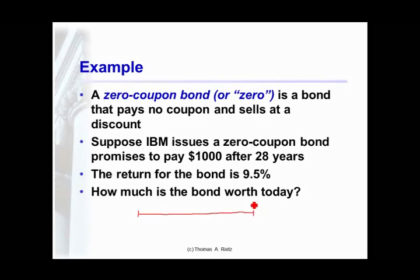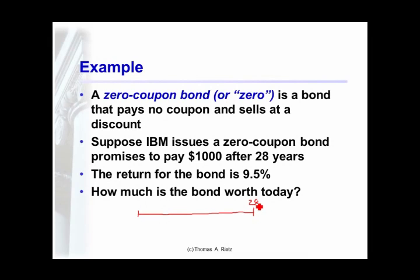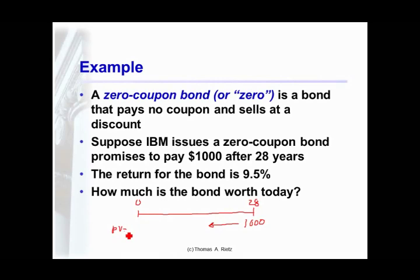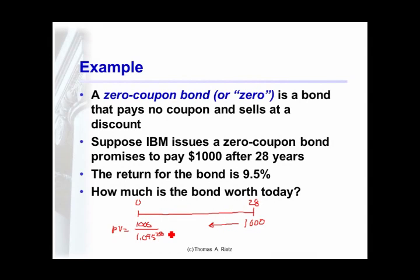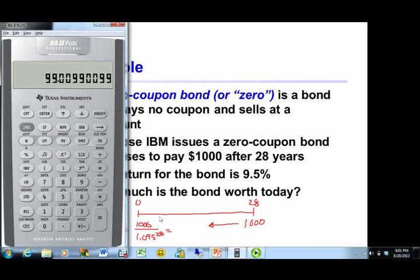that might be issued by IBM and pay one cash flow, $1,000 in 28 years. How much would you pay to buy that today is the present value of that cash flow? That present value is the future cash flow divided by 1 plus the interest rate. So if I want to pay for 28 times because I have to wait for 28 years to get it, that actually is going to be a pretty small number. 1.095 to the power of 28 times $1,000 equals $78.78.